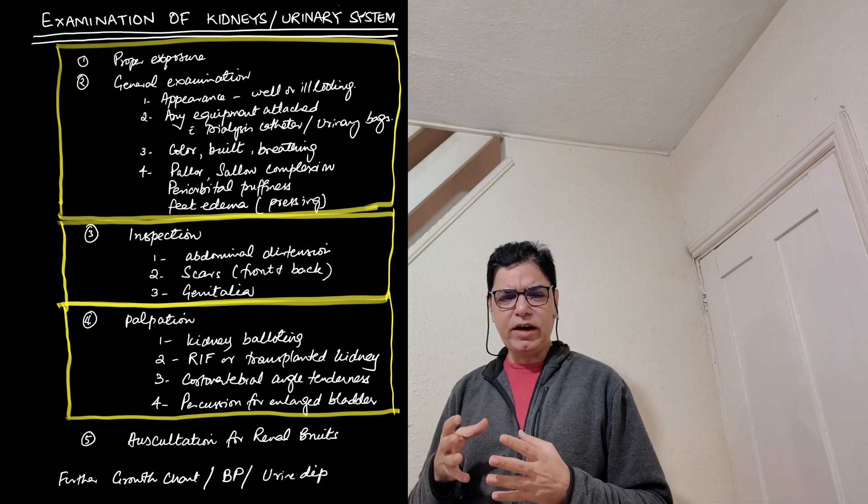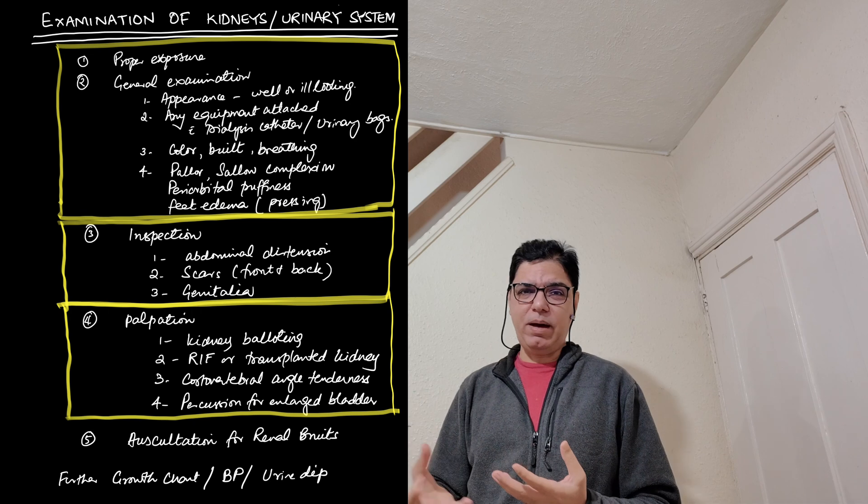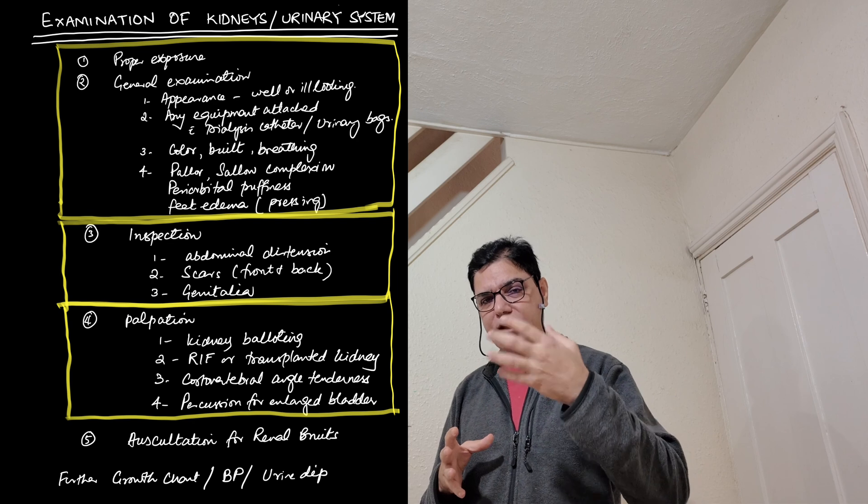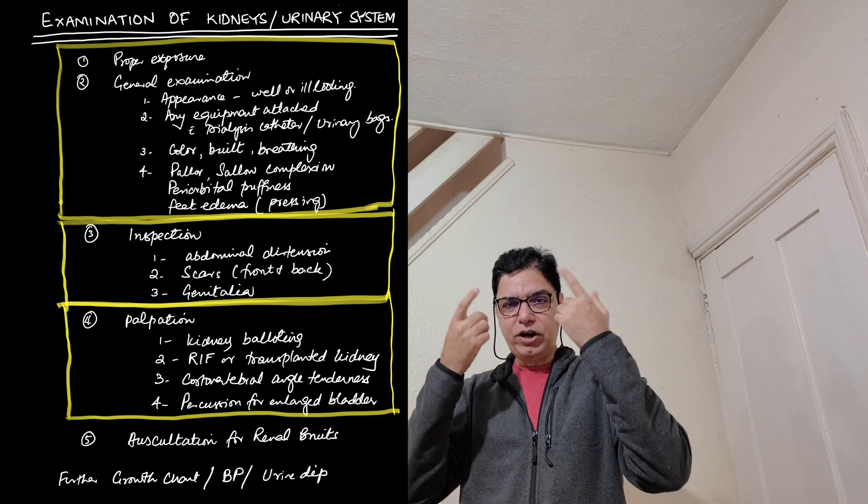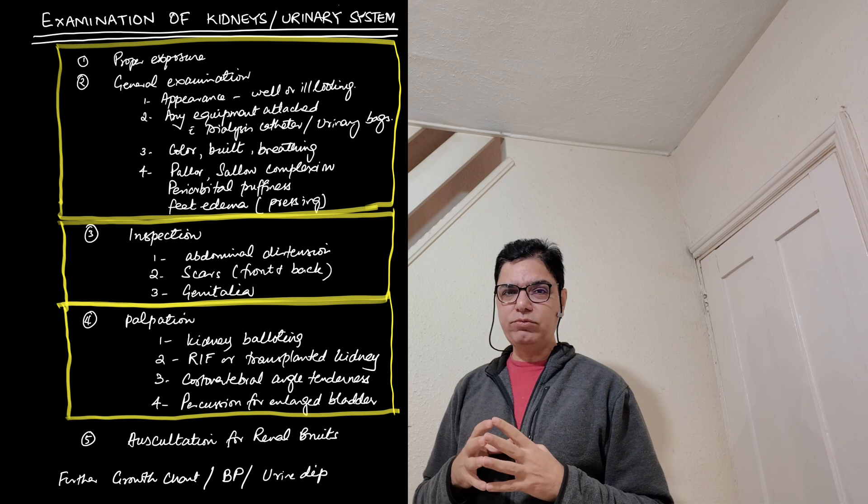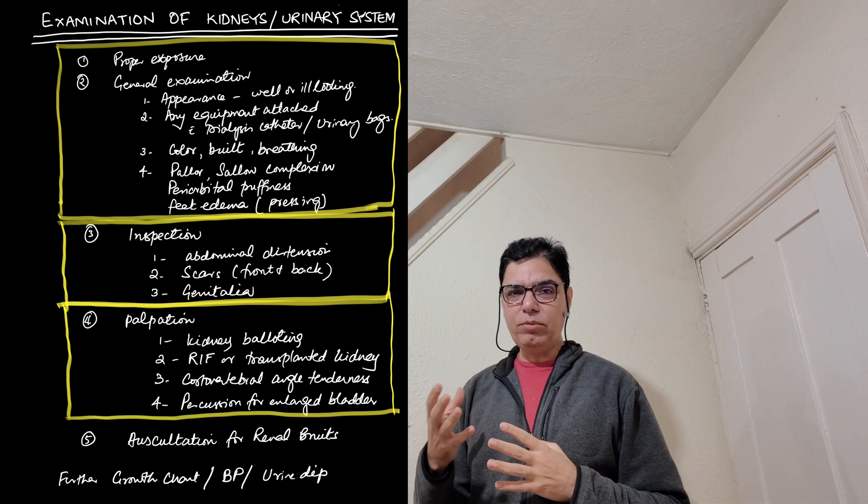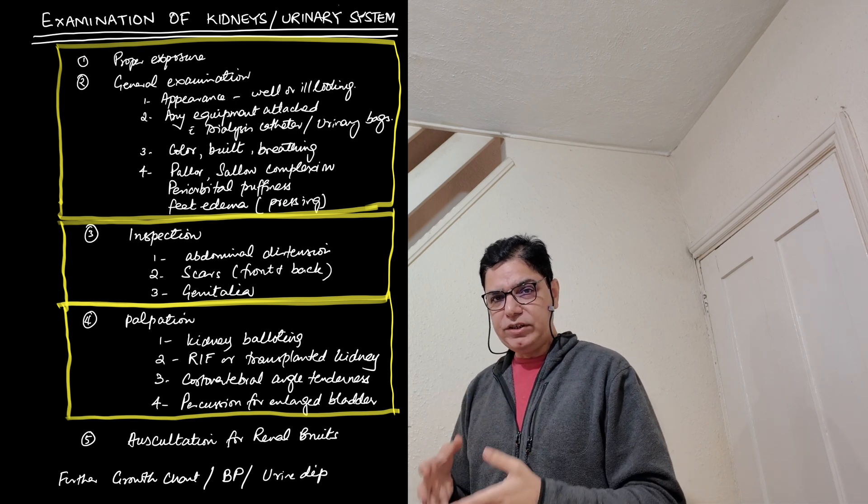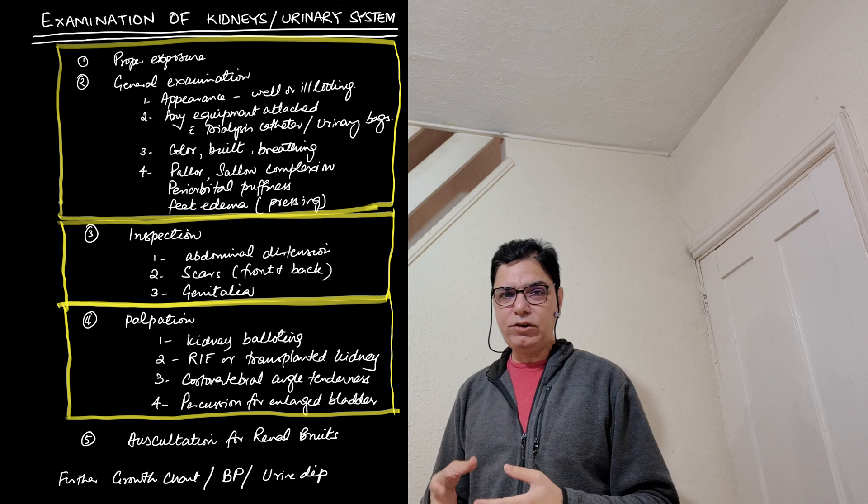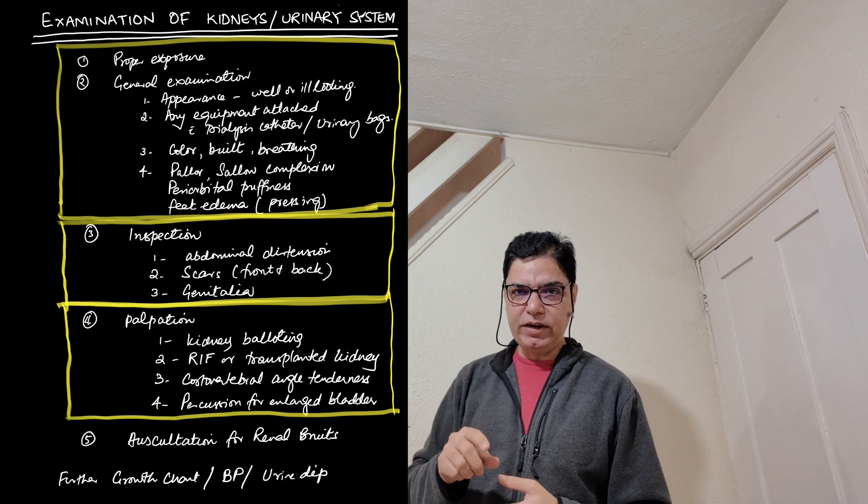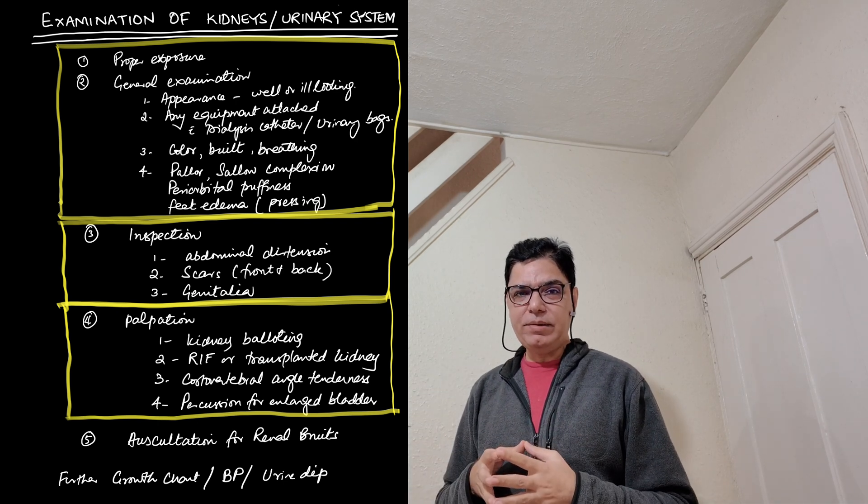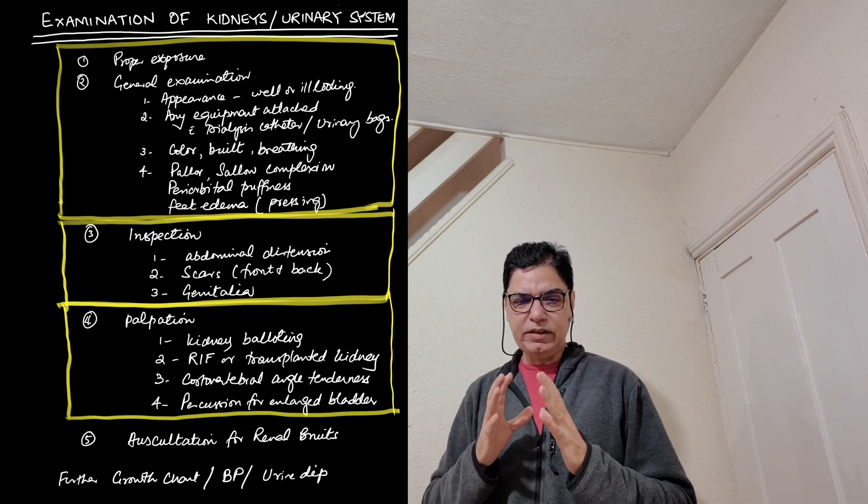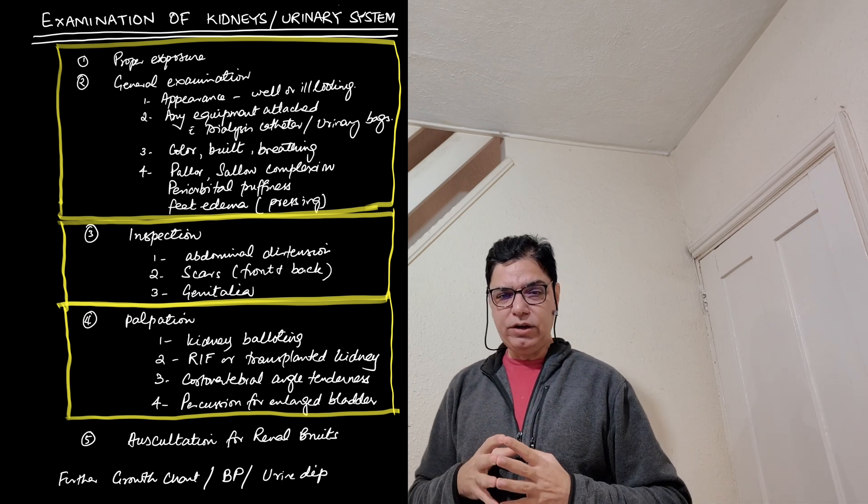You also look if the child has got pallor, has he got cellar complexion, which can sometimes happen in chronic kidney disease. And while you are examining, you also look whether the child is exhibiting any periorbital puffiness, which might be an indicator of glomerular disease, like for example nephrotic syndrome. And you also look for feet edema. If you feel like the feet are swollen, then you have to put your finger in and see what is the grade of that edema and whether it's a pitting one or non-pitting one.